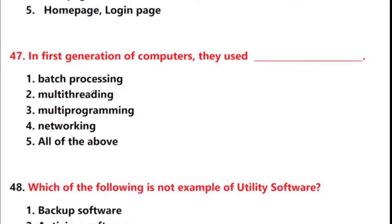Next question: in the first generation of computers, they used — options: batch processing, multi-threading, multi-programming, networking, all of the above. Answer is option 5: all of the above.